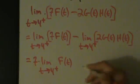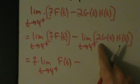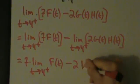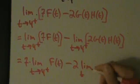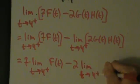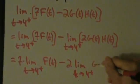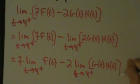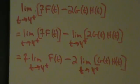Now if we go to the second term here, what do we have? We have minus 2, we can pull out the 2, alright? And then what's left, limit as t approaches 4 from the right of G of t times H of t. And again, these square brackets aren't really necessary, okay?